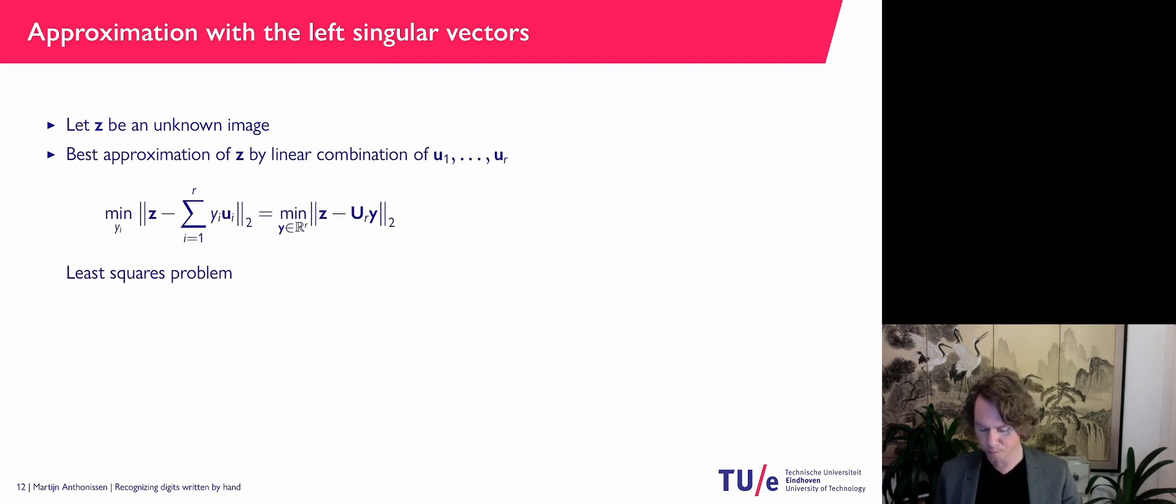What I'm going to do is I'm going to express it into these columns of the U matrix as best as I can. So what does that mean? I'm going to minimize over the coefficients